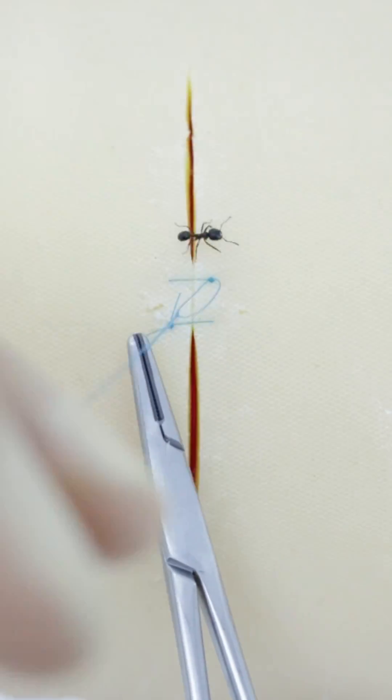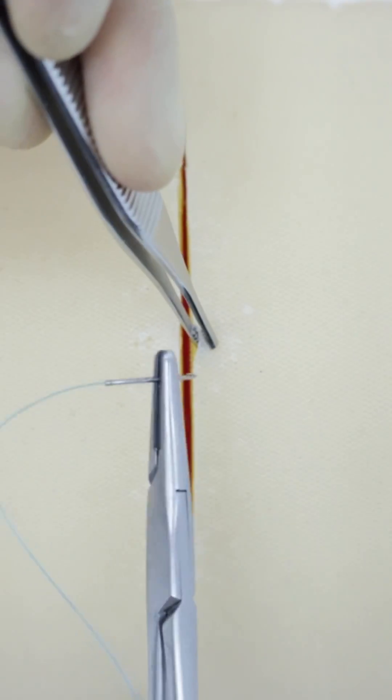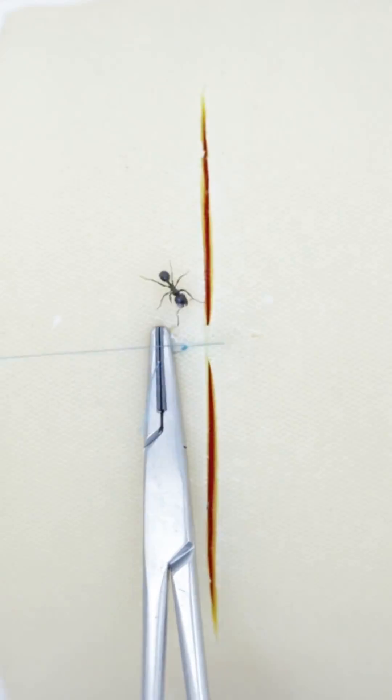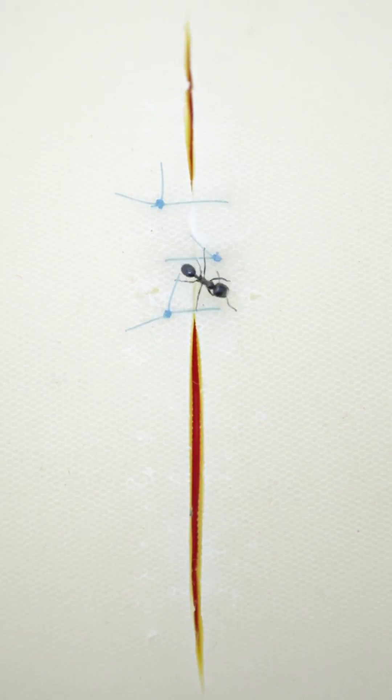Ants can perform emergency life-saving surgery on humans and each other. Their first recorded use in surgery was to close intestinal lesions around 1000 BC, but later records show their growth in popularity as skin stitches.